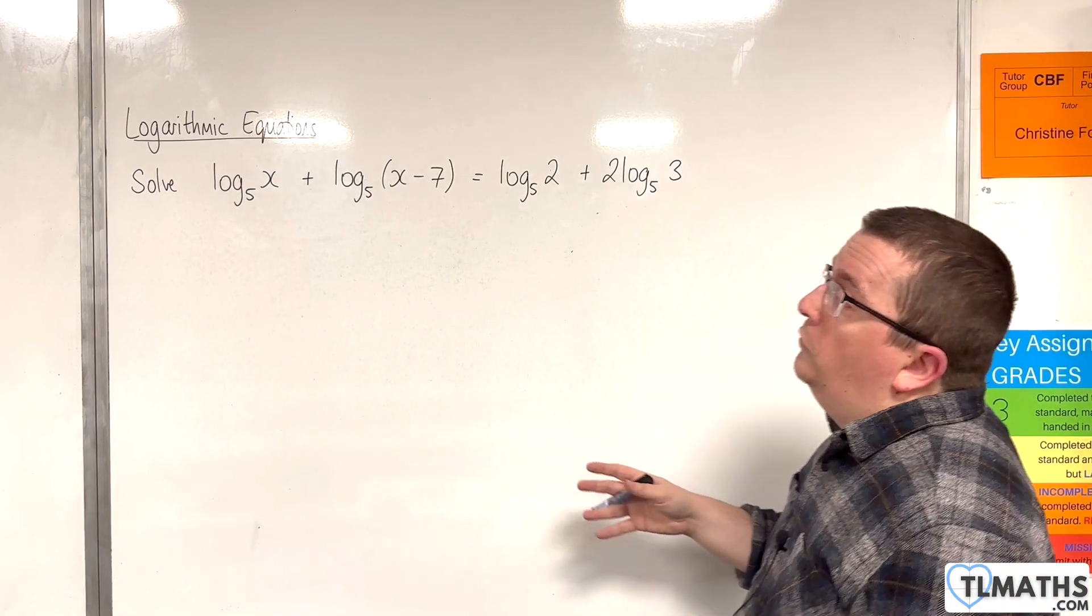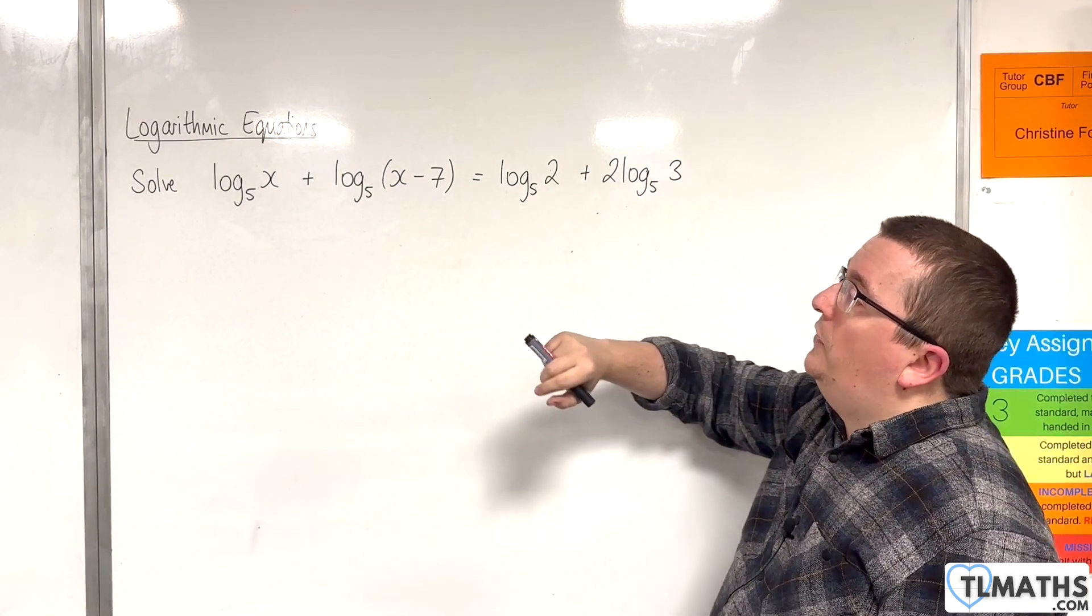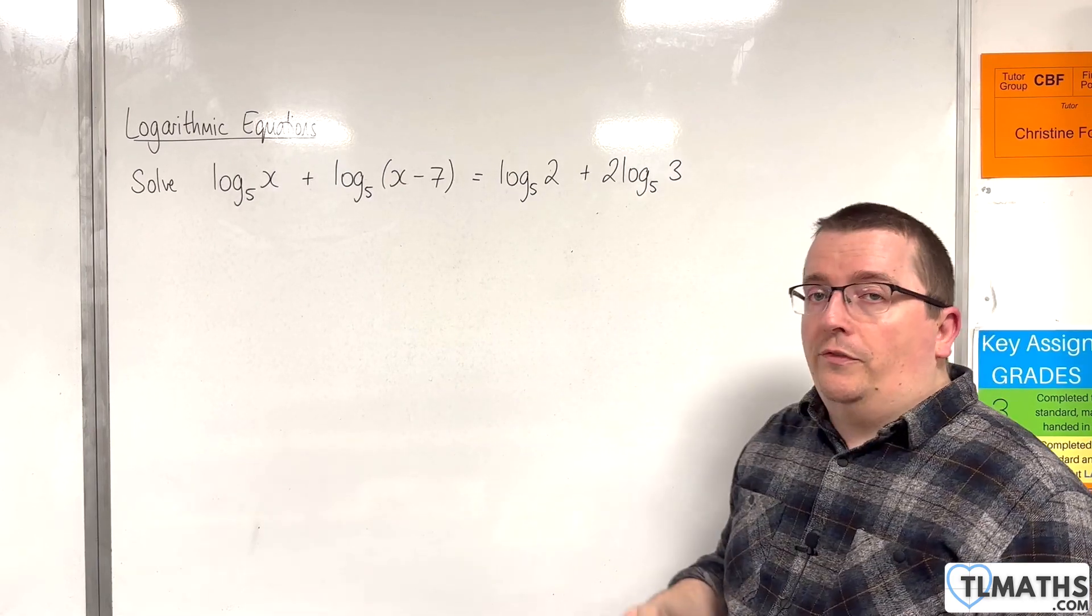In this video we're going to solve log base 5 of x plus log base 5 of (x - 7) equals log base 5 of 2 plus 2 log base 5 of 3.